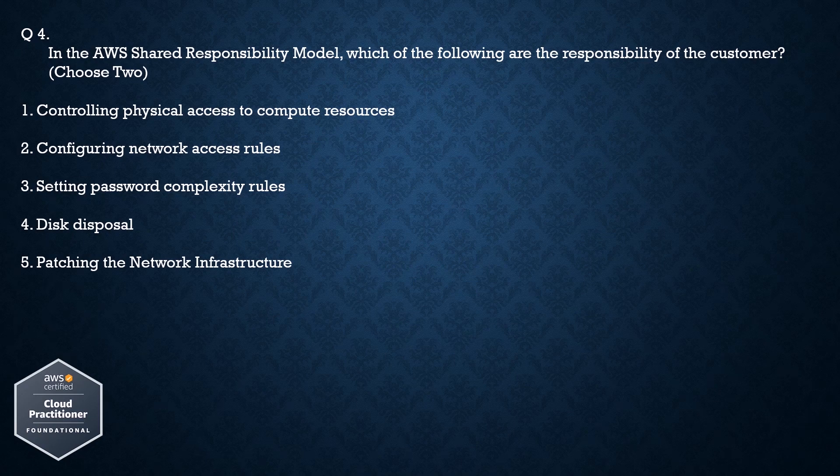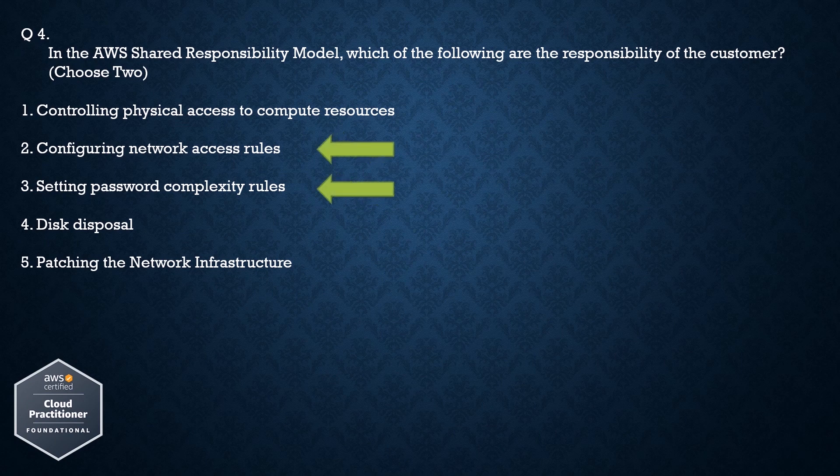Option 4: Disk disposal. Option 5: Patching the network infrastructure. The correct answers are: configuring network access rules, and setting password complexity rules.